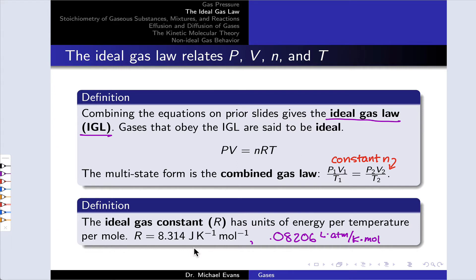And another form that you'll commonly use, which is convenient when you're dealing with calculations with gases, is a form that uses liter atmospheres as the energy unit, 0.08206 liter atmospheres per Kelvin per mole.